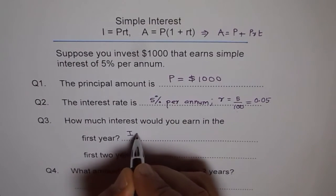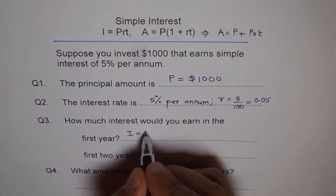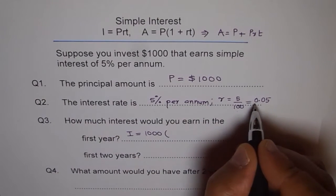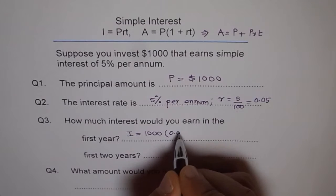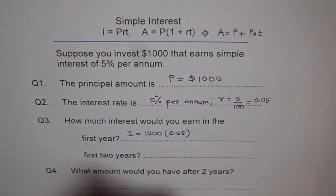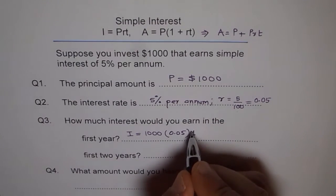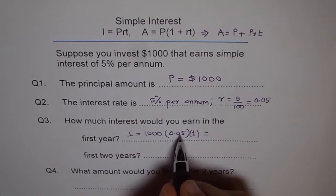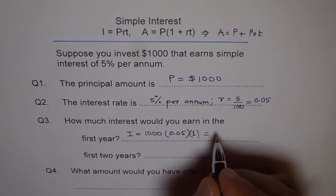We say I equals to principal amount. Principal amount is $1000. And rate as I said 0.05, 0.05. And first year means only one year. So we write times one. And if you calculate this, $1000 means one decimal moves one, two, one more place. $50.